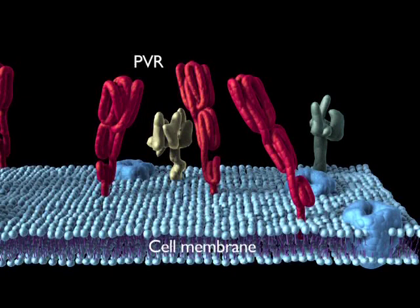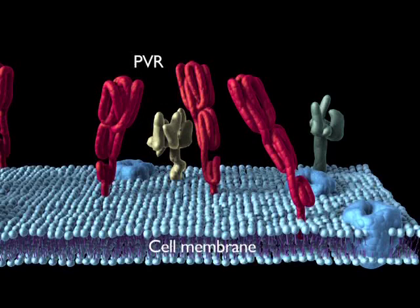The poliovirus receptor, or PVR for short, makes contact with the virus only through domain 1. It docks on the canyon of the virus and leads to major conformational changes in the particle.